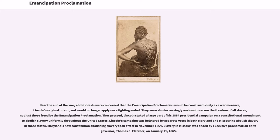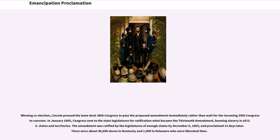Lincoln's campaign was bolstered by separate votes in both Maryland and Missouri to abolish slavery in those states. Maryland's new constitution abolishing slavery took effect in November 1864. Slavery in Missouri was ended by executive proclamation of its governor, Thomas C. Fletcher, on January 11, 1865. Winning re-election, Lincoln pressed the lame-duck 38th Congress to pass the proposed amendment immediately rather than wait for the incoming 39th Congress to convene. In January 1865, Congress sent to the state legislatures for ratification what became the 13th Amendment, banning slavery in all U.S. states and territories. The amendment was ratified by December 6, 1865, and proclaimed twelve days later. There were about 40,000 slaves in Kentucky and 1,000 in Delaware who were liberated then.